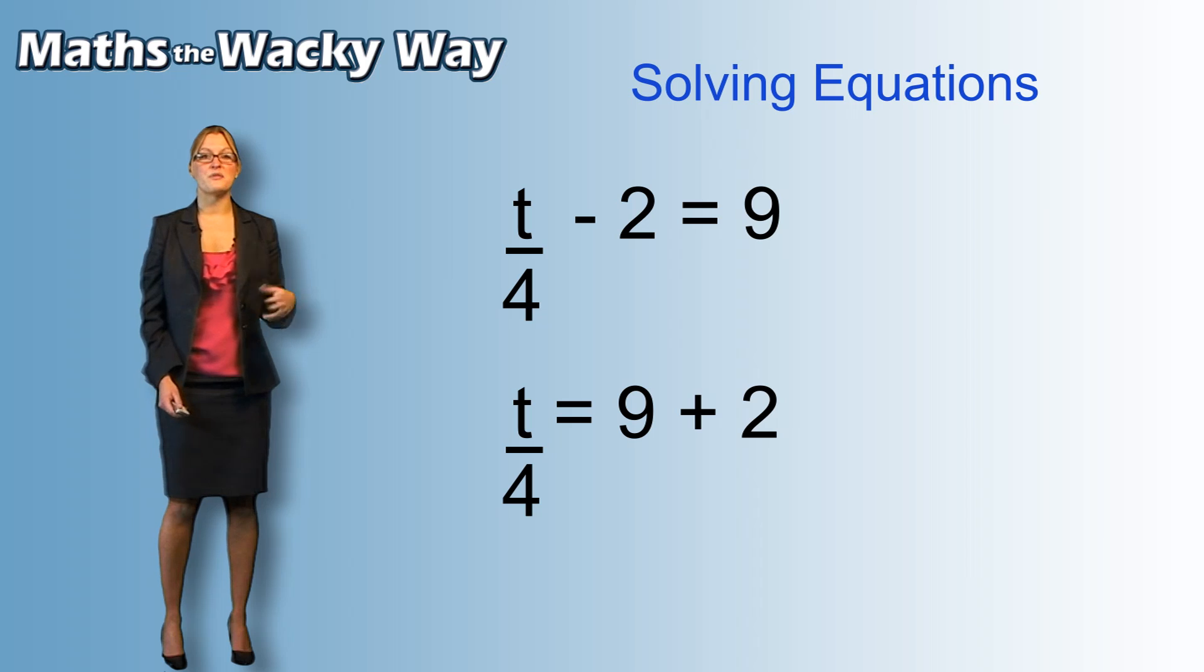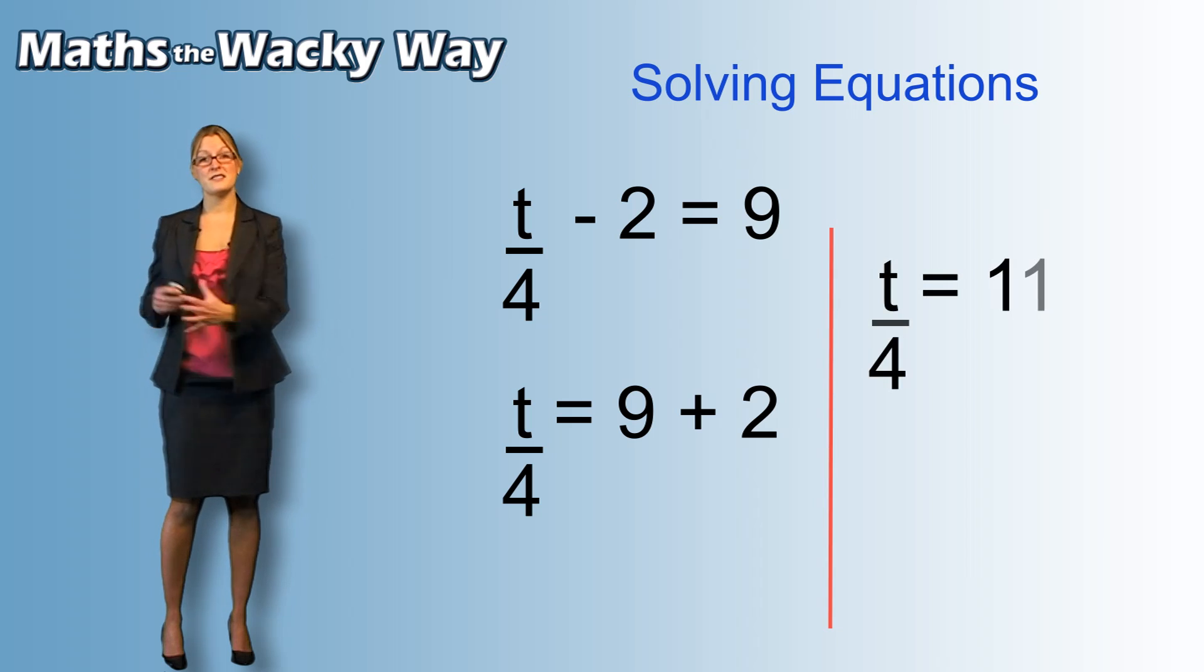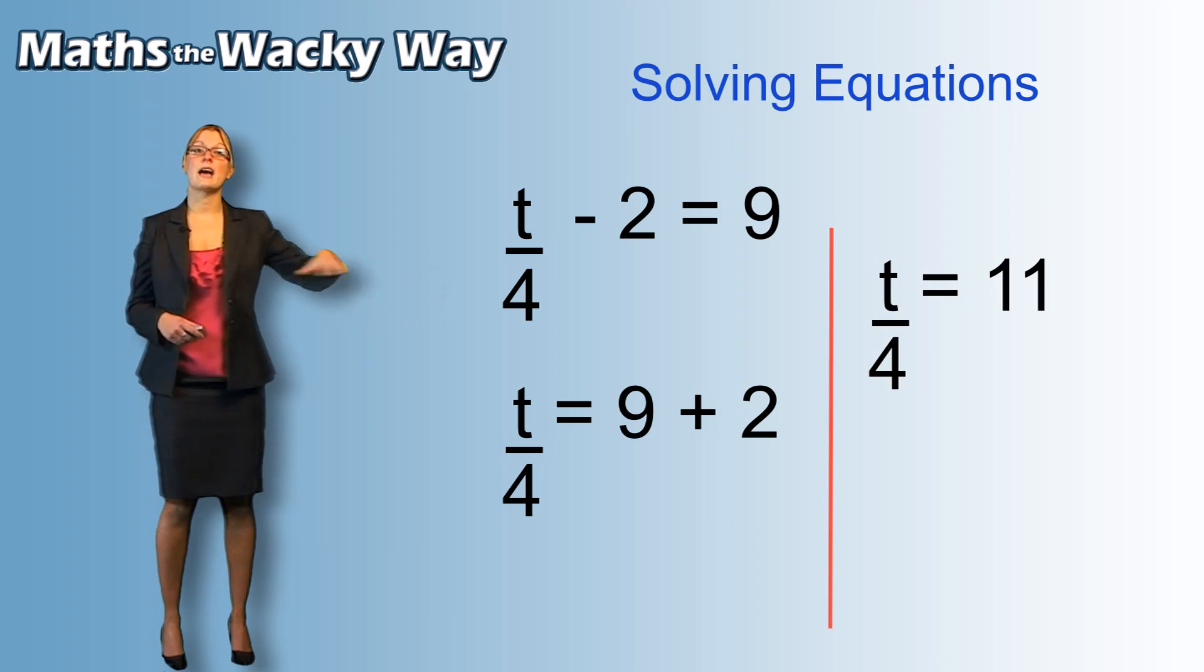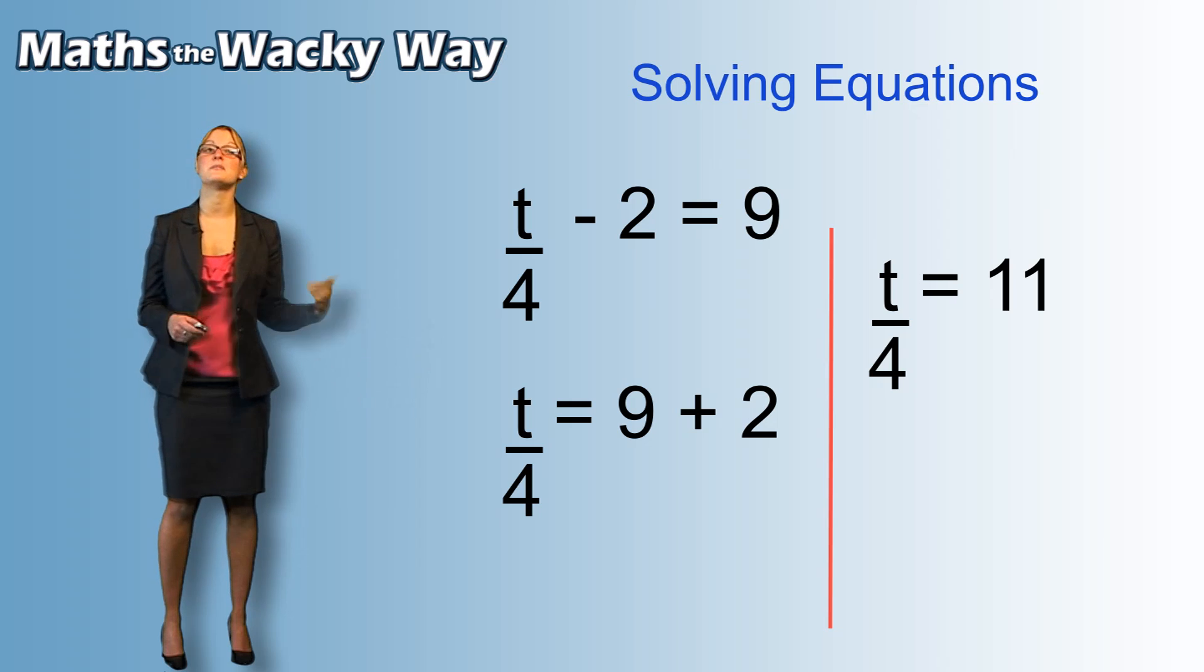Now, like we did before, we can tidy up. So, what we end up with is t divided by 4, still on this side, but then we have an 11 on the other side because we've tidied up.